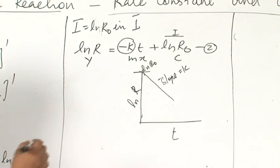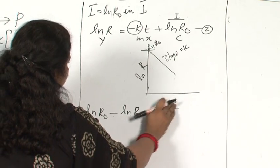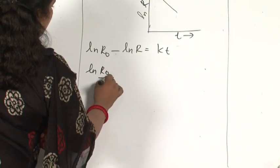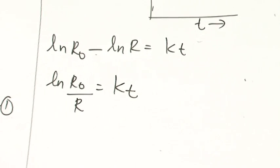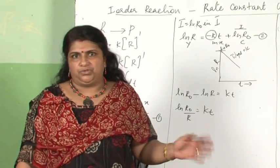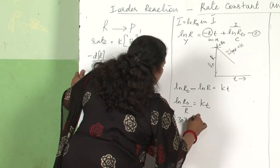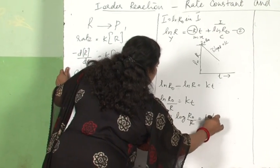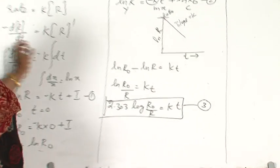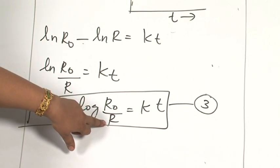From equation 2, rearranging: ln R₀ − ln R = Kt, or ln(R₀/R) = Kt. We normally use logarithm to the base 10, so converting natural logarithm by multiplying with 2.303, the expression becomes: 2.303 log(R₀/R) = Kt. This is equation 3. This equation gives the relationship between the rate constant, time, initial concentration, and the concentration after time t.